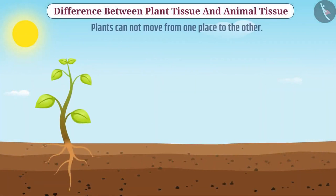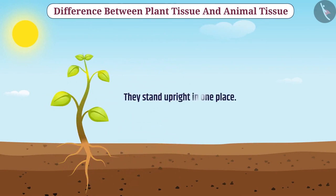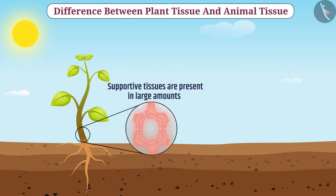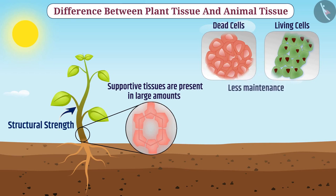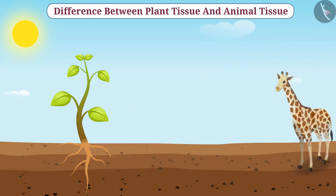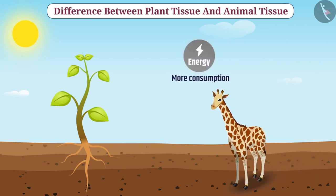Plants cannot move from one place to another and they stand upright in one place. Therefore, in plants, supportive tissues are present in large amounts, which provides them with structural strength. Since dead cells can provide structural strength just like living cells, and dead cells require less maintenance, the supportive tissues are made up of dead cells. In contrast, animals can move from one place to another, and that's why animals consume more energy as compared to plants.